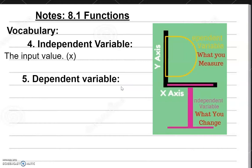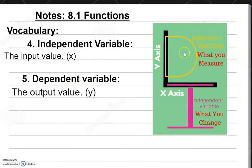The last vocabulary term is the dependent variable. The dependent variable is the output value — that's the Y, the one that goes vertically up and down. This is what you measure and calculate; it's your final result. The Y depends on whatever information X gives you. So X is what you can change, and Y is what you calculate.